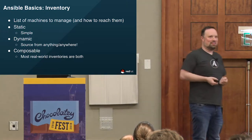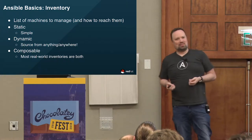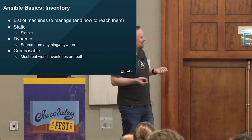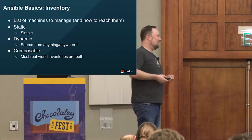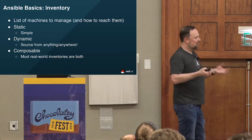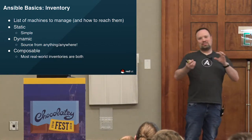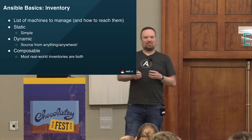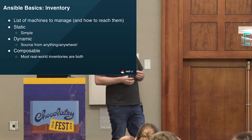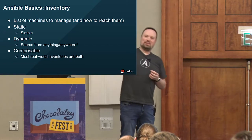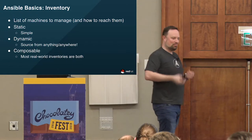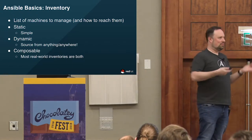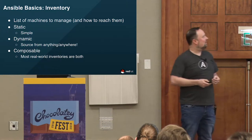Just as a proof of concept, I wrote a dynamic inventory plugin that talked to an Excel spreadsheet — you can do just about anything, not that it's a good idea. Ansible inventories are also composable, so you can take the best of both worlds: some static inventory that defines how you want groups structured, while populating those groups dynamically. Those things can stick together.